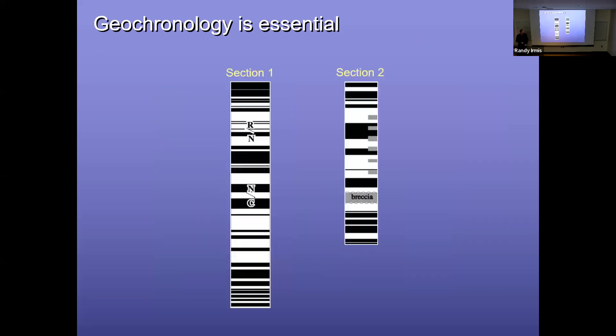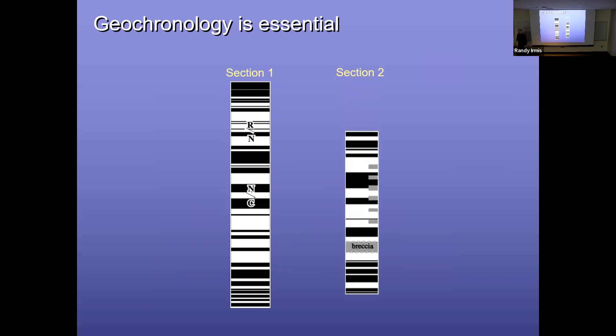Having absolute ages is also really critical for other geochronologic techniques, like magnetostratigraphy. You have these wonderful, really dense changes in magnetic polarity in a sequence. But how do you know how to correlate them without being able to put some ages on them? It's not always clear exactly how these barcodes correlate.